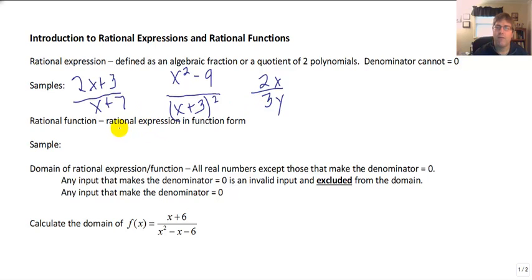A rational function is simply a rational expression in function form. So we could have our function named f, f of x, so our function f in terms of x: 2x plus 3 over x plus 7, or y equals 2x plus 3 over x plus 7. But this is in function form.